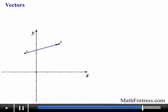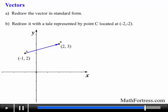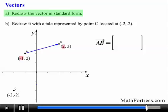For example, say we had a vector whose tail is located at (-1, 2) and head is located at (2, 3). And we are asked to redraw the vector in standard form and redraw it with a tail represented by point C at (-2, -2). So redrawing it in standard form is pretty easy. All we need to do is find the components of the vector. So we find the difference of the x coordinates of the points and find the difference of the y coordinates of the points. So doing that we obtain the following. Vector AB is going to be equal to [2 - (-1), 3 - 2], which equals [3, 1].